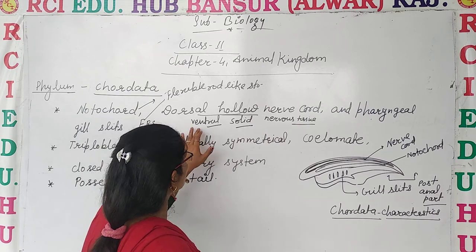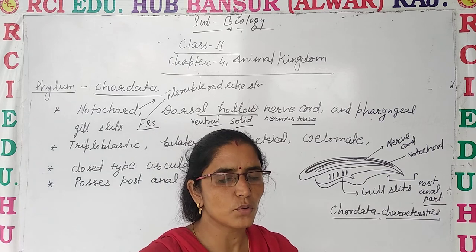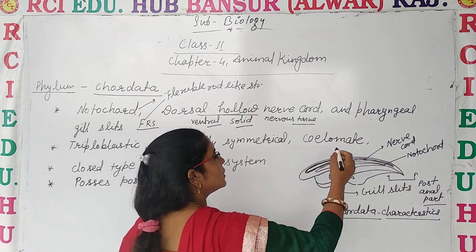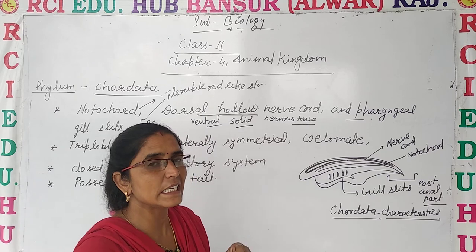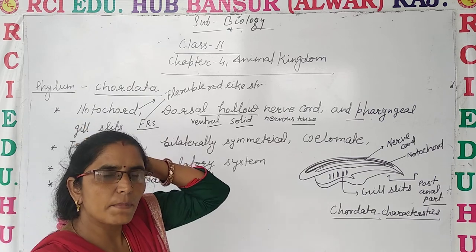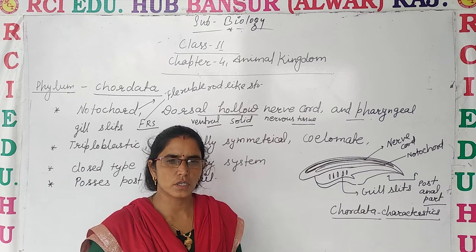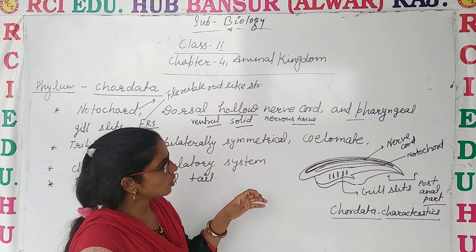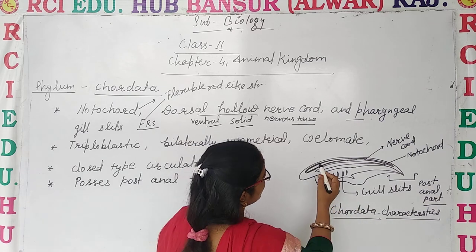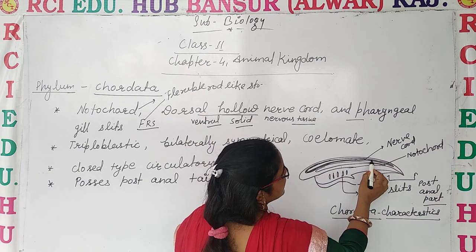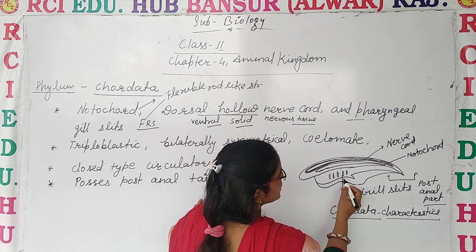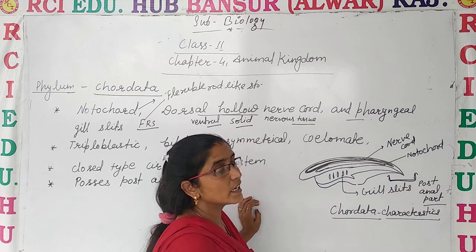The anterior part is the upper part. The third peculiar feature is pharyngeal gill slits — is that clear? These three features are: notochord, dorsal hollow nerve cord, and pharyngeal gill slits. One more peculiar feature is the post-anal tail, which is present in chordates.